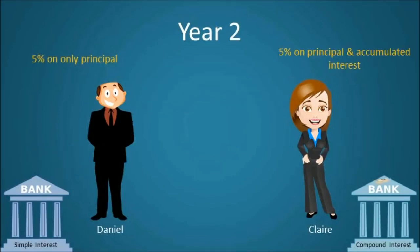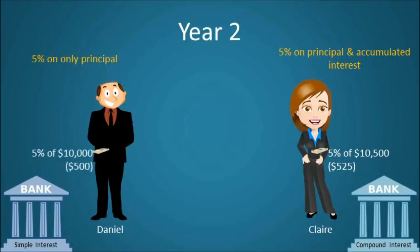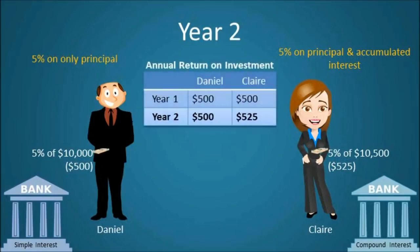With this in mind, Claire will earn $525 in year 2, bringing her total capital to $11,025. Meanwhile, Daniel will earn only $500 in year 2, bringing his total capital to $11,000. So after year 2, Claire has made $25 more than Daniel, all without lifting a finger.